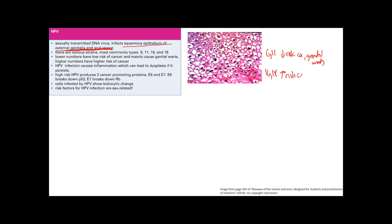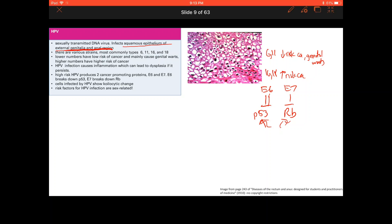HPV 16 and 18 are high-risk for cancer. They produce two proteins: E6 and E7. E6 blocks p53, and E7 blocks Rb — both critical tumor suppressor genes guarding the cell cycle. A mnemonic: E6 and p53 don't add up to 60, so pair them together; E7 then blocks Rb. These infections cause inflammation, leading to dysplasia and eventually cancer.